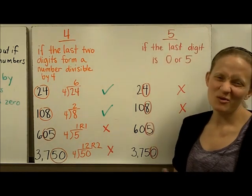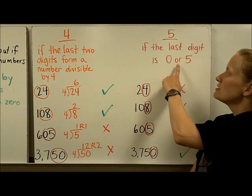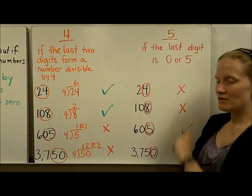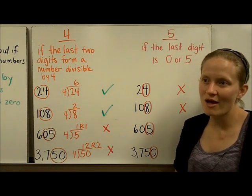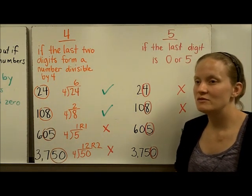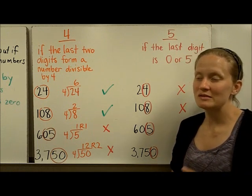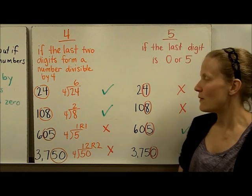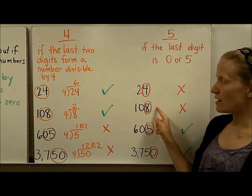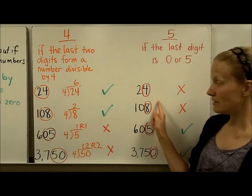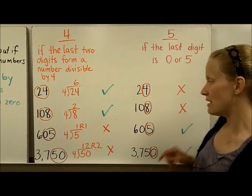5 is probably one you already know. If the last digit is 0 or 5, then the entire number is divisible by 5. That makes sense because when we count by 5s — 5, 10, 15, 20, 25, 30 — each number ends in either a 5 or a 0. So looking at our four numbers, the two that don't end in 5 or 0 are not divisible by 5, and the two that end in 5 and 0 are divisible by 5.